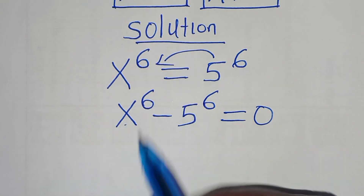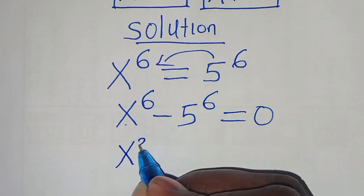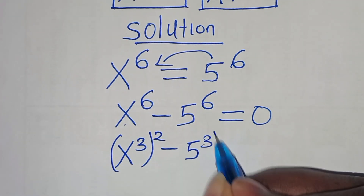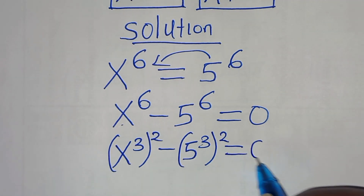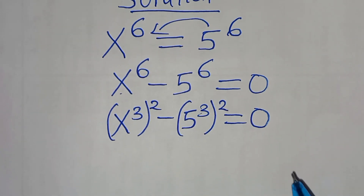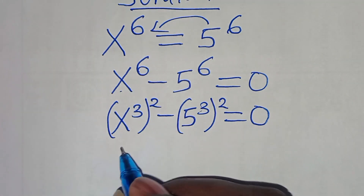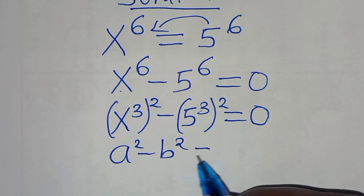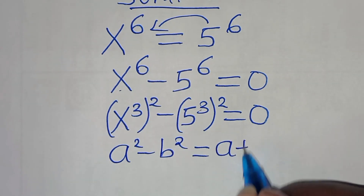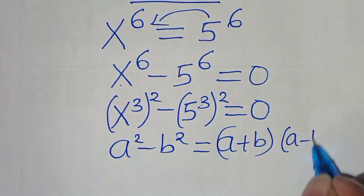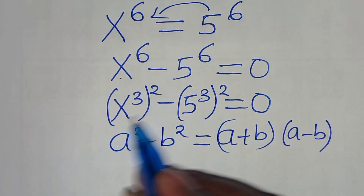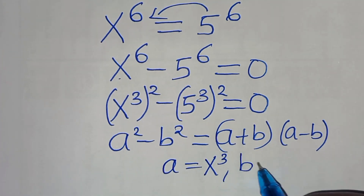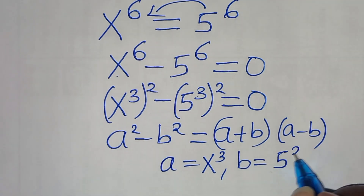We can express x to the power of 6 as x to the power of 3, raised to the power of 2, minus 5 to the power of 3, raised to the power of 2, equal to 0. This equation is in the form of a squared minus b squared — the difference of two perfect squares — which we can write as (a + b)(a − b). Here a equals x to the power of 3, and b equals 5 to the power of 3.